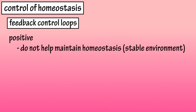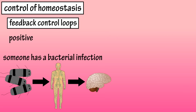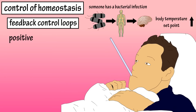Positive feedback control loops do not help the body maintain a stable homeostatic condition. Positive feedback control loops amplify the change that is happening to the body. For example, if someone has a bacterial infection, the immune system signals the brain to increase the body's temperature set point, causing a person to have a fever. This can be a natural, normal reaction.